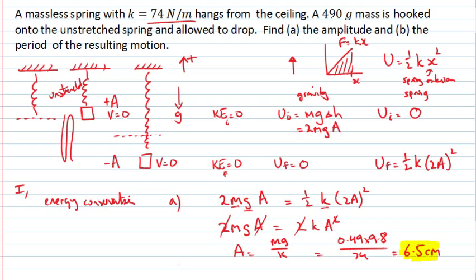For part B, we're asked to find the period of the resulting motions. In fact, that's a much easier thing to do. We could have gotten that straight away, because we know that the period is equal to 1 over the frequency, and we know that the frequency is related to omega over 2π.